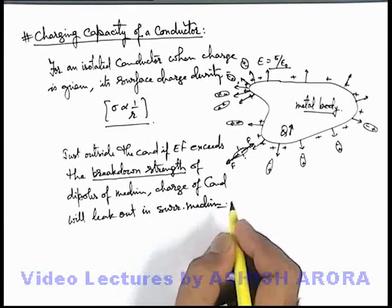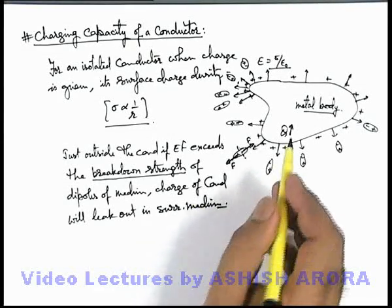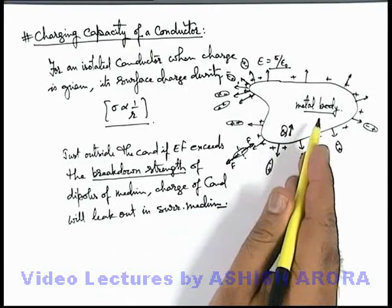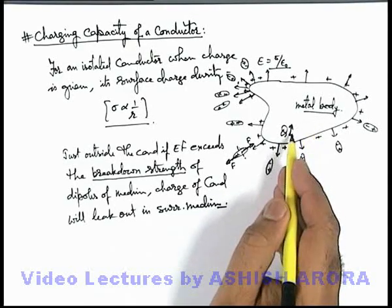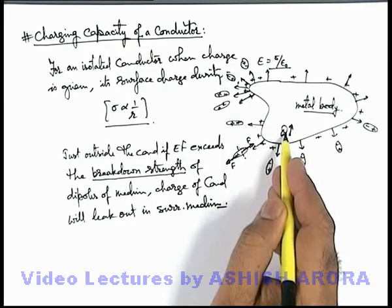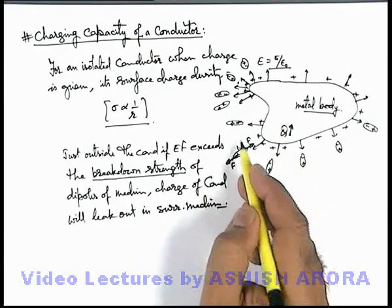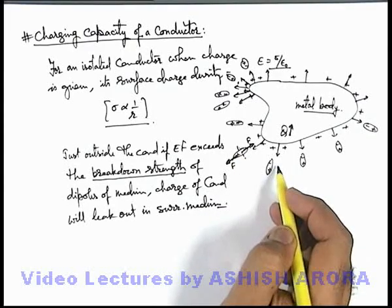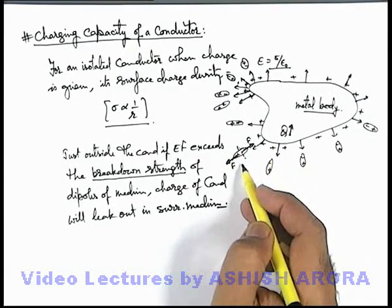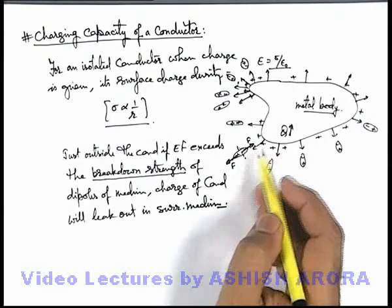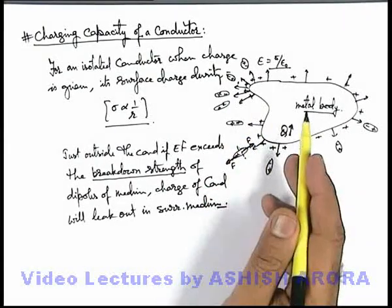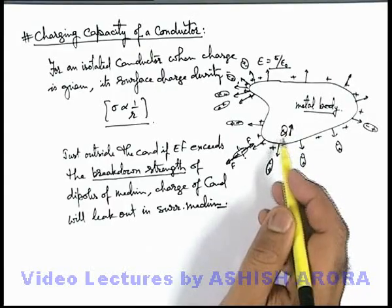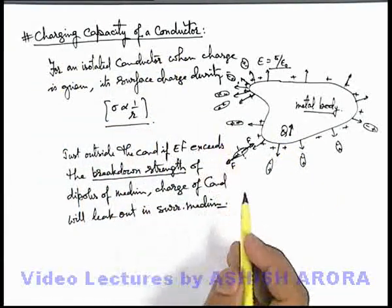So here we can say: in a given medium, when a metal body is placed, there exists a maximum limit of charge up to which the metal body can be charged, beyond which if we supply some charge its electric field will produce dielectric breakdown in the medium — the dipoles of the medium will break and the charge will start leaking out. And it happens mainly at the sharp edges of the conductor. This maximum limit up to which the body can be charged is called the charging capacity of the conductor.